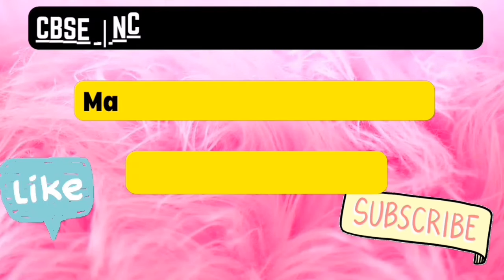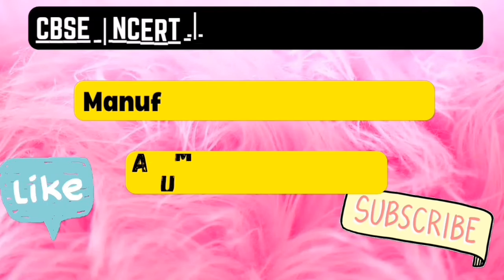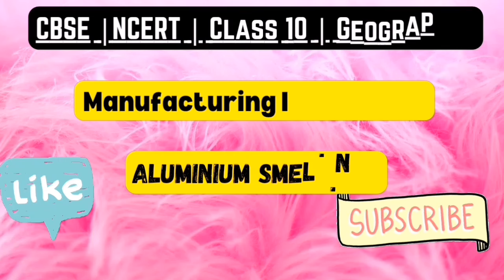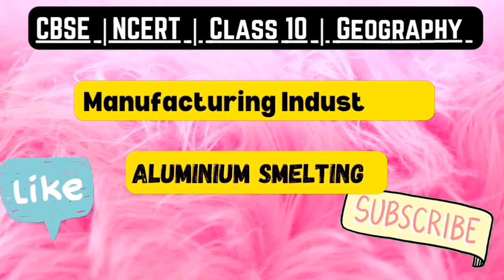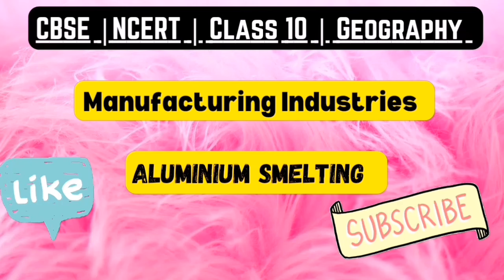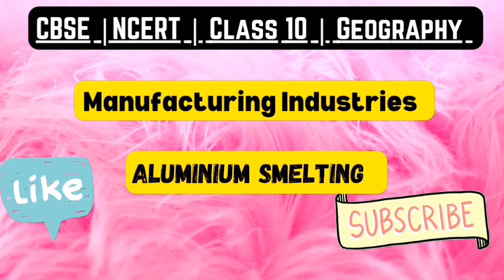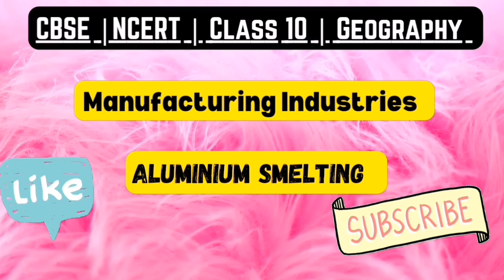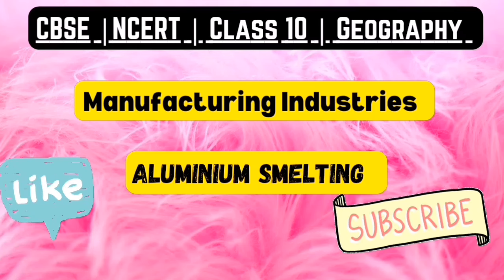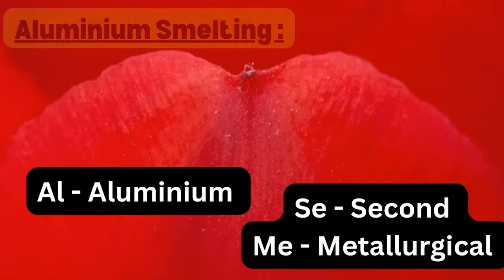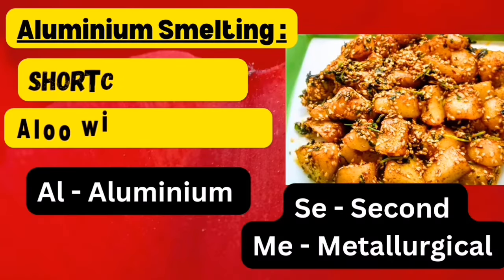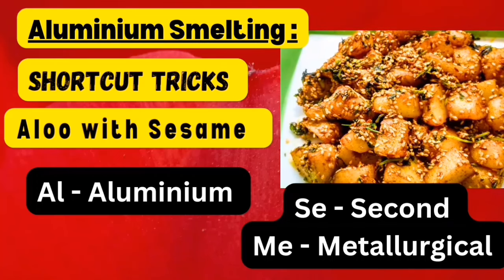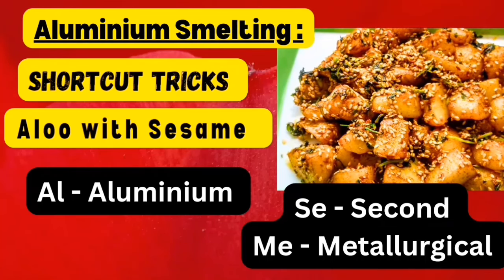Hi students, in this video let's discuss about the manufacturing industries chapter, aluminium smelting topic, shortcut tricks. Hope this video will help you to study all the points given under this topic. So kindly watch this video without skipping. Without further delay, let's begin the topic. The first shortcut is 'aloo with sesame'. Aloo is nothing but potato — take the word aloo.